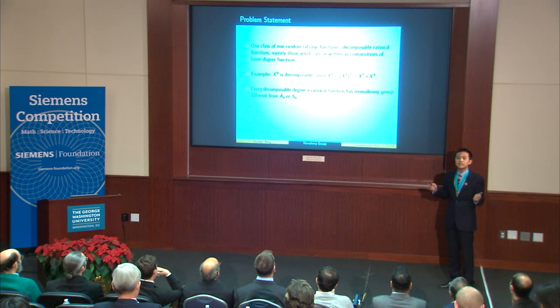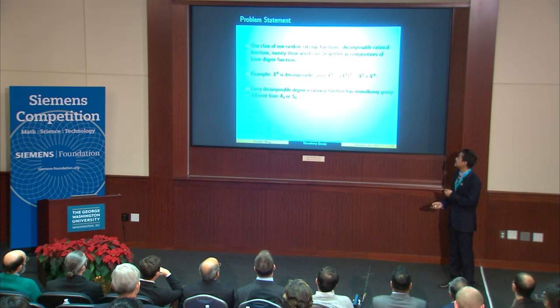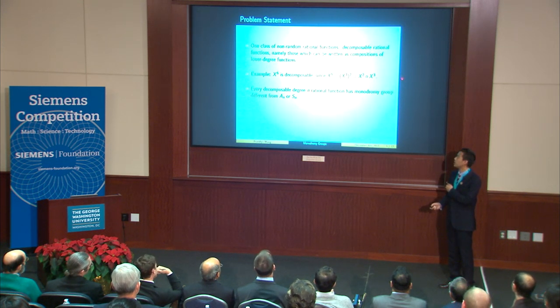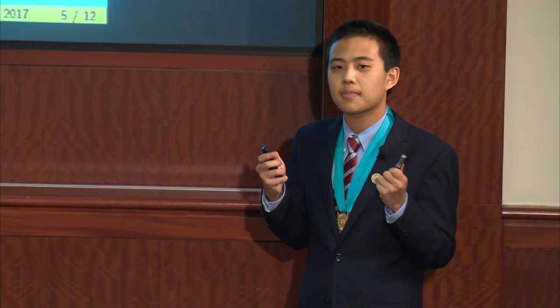Now let me talk about my problem statement, which asks about these non-random rational functions. How can a rational function be non-random? One way is for the rational function to be decomposable, meaning that it can be written as the composition of lower degree rational functions. For example, x to the sixth is decomposable, since x to the sixth is equal to x cubed, then squared. Every decomposable degree n rational function has monodromy group different from A_n or S_n, meaning that they aren't random. However, there are ways for indecomposable rational functions to be non-random too. Therefore, we ask: which indecomposable degree n rational functions have monodromy groups different than A_n or S_n? A result for this question will immediately yield results for all rational functions, since indecomposable rational functions really are the building blocks of all rational functions, just like prime numbers are the building blocks of the integers.